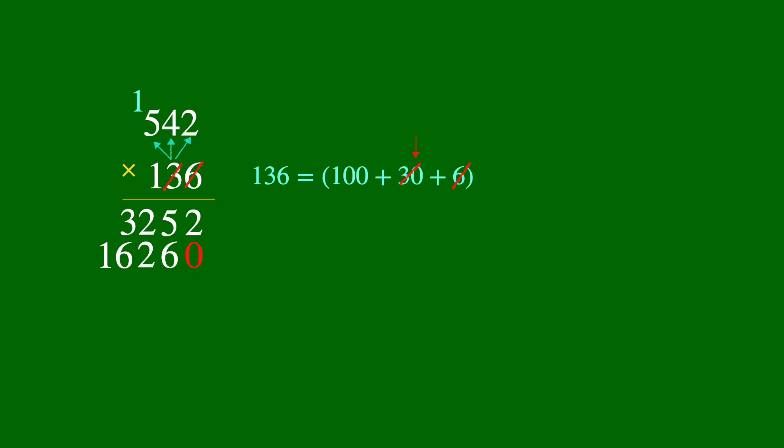Now we have one digit left. But remember it is not just a 1 but a 100 instead. And 100 has two zeros. So we will place two zeros in the partial product before we start multiplying. Now we can multiply 1 times 2 to get 2 and 1 times 4 to get 4. And 1 times 5 to get 5.